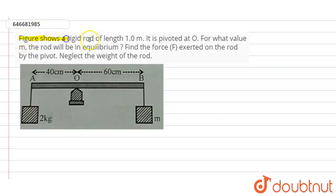Here in this question, it is given that the figure shows a rigid rod of length 1.0 meters. It is pivoted at O. For what value of m will the rod be in equilibrium? Find the value of force F exerted on the rod by the pivot. Neglect the weight of the rod.